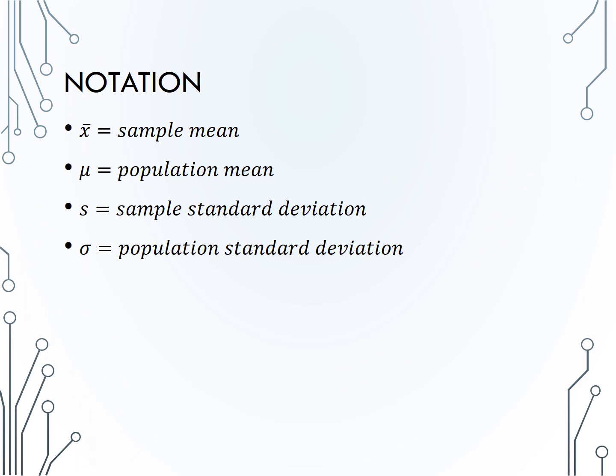In section 2.1, we covered the notation for the statistics or parameters we often record for quantitative data, but let's review those now. Typically, we will be interested in the mean and standard deviation of a sample, so the statistic notation we will use for mean is x-bar, and a sample standard deviation is denoted s. The parameter notation for a mean is mu, the Greek letter for m standing for mean, and the notation for a population standard deviation is sigma, the Greek letter for s.